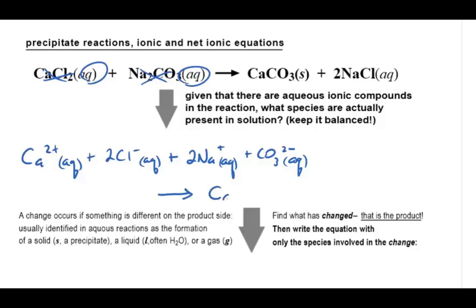On the product side, calcium carbonate forms as a solid, so that means its ions are bonded together, and that is shown by writing it as a compound, not as individual ions.